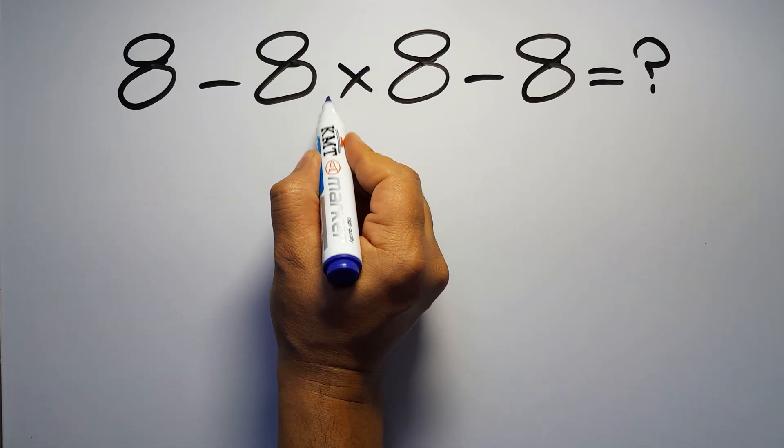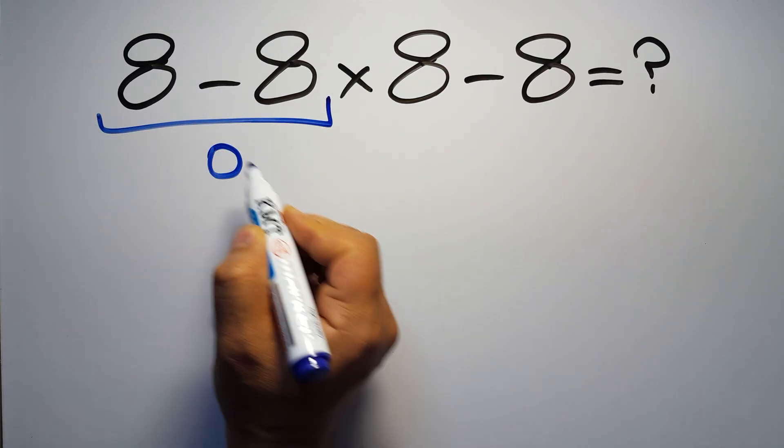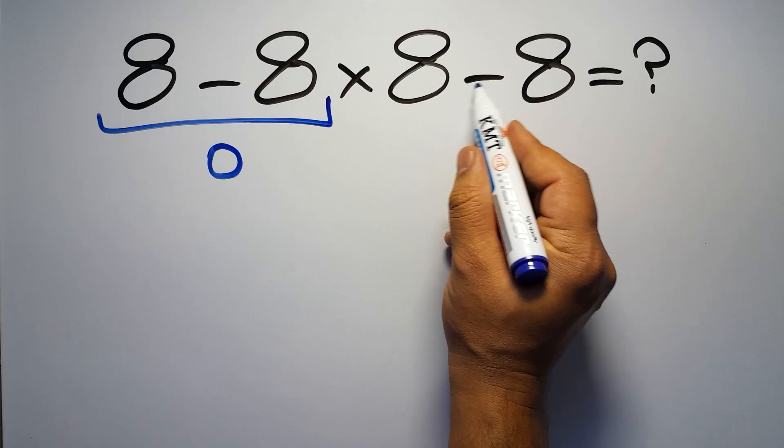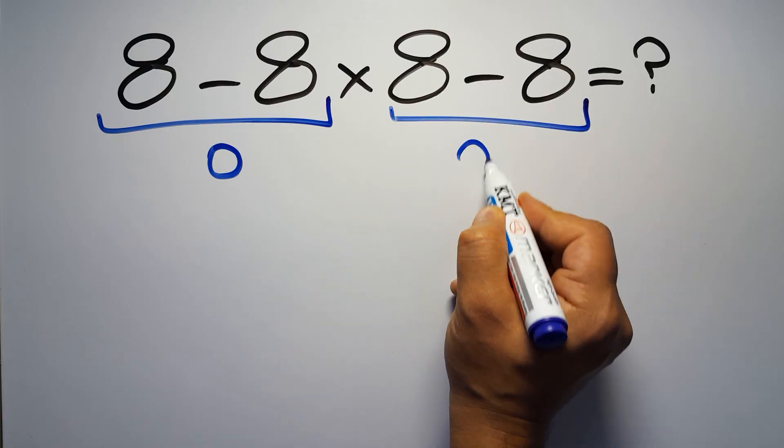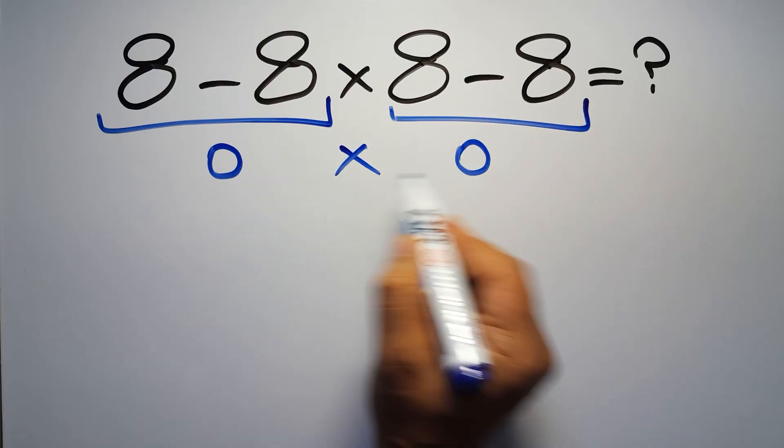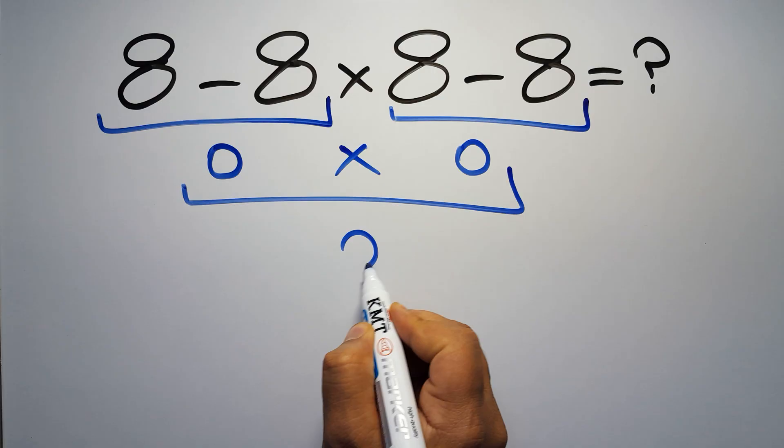Eight minus eight equals zero, and again here we have eight minus eight, so zero times zero is just zero.